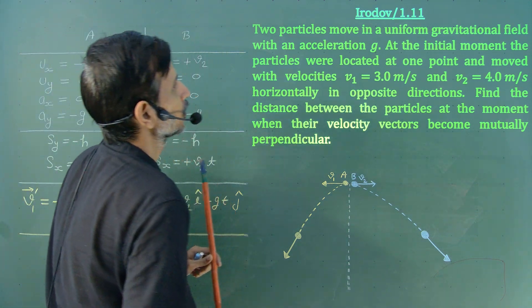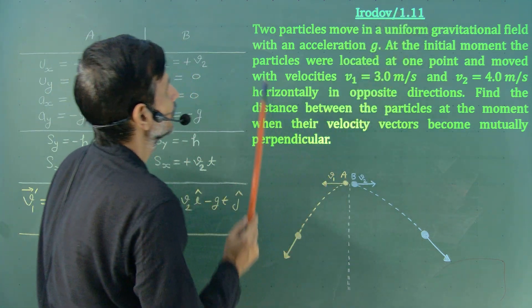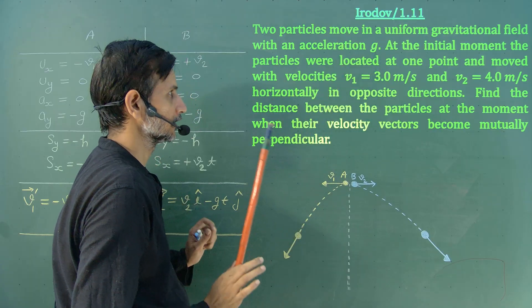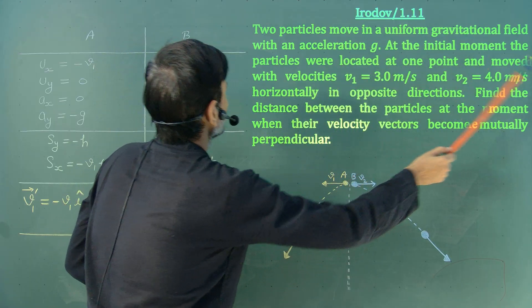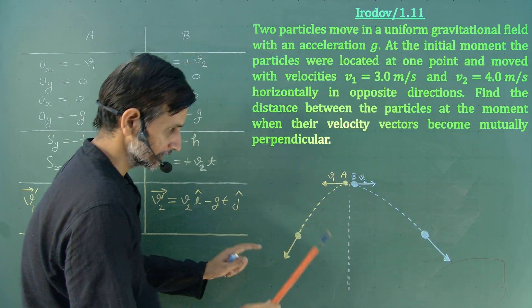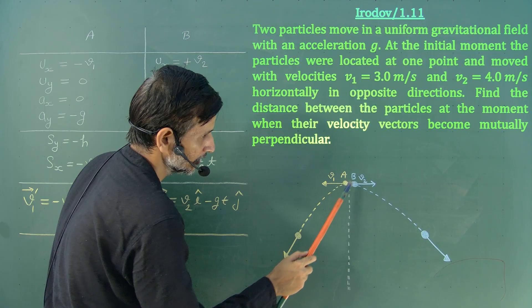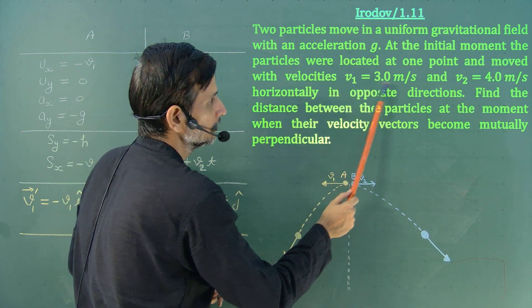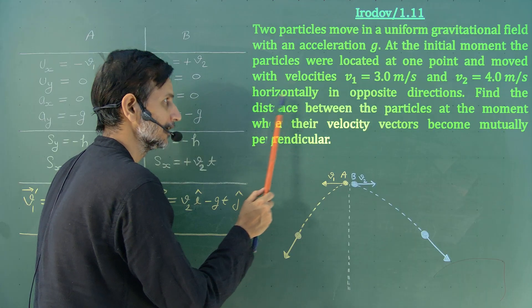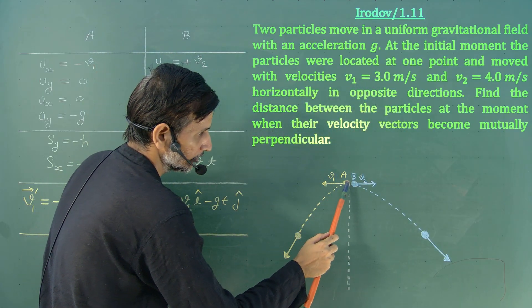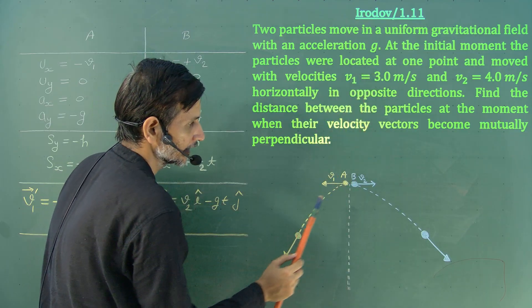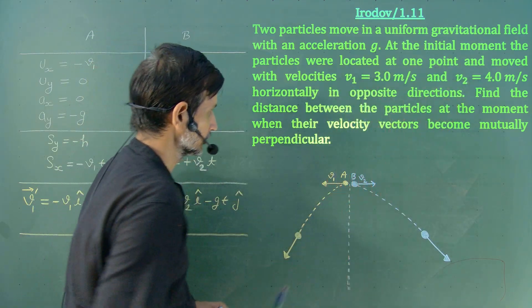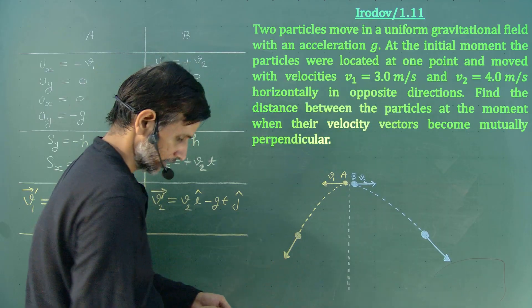Let us solve this Irodov problem, problem number 1.11. Two particles move in a uniform gravitational field with an acceleration g. At the initial moment the particles were located at one point. There are two particles A and B, both at the same point initially, moving with velocity v1 = 3 m/s and v2 = 4 m/s horizontally in opposite directions. Particle A moves in the minus x direction at 3 m/s and particle B moves in the plus x direction at 4 m/s.